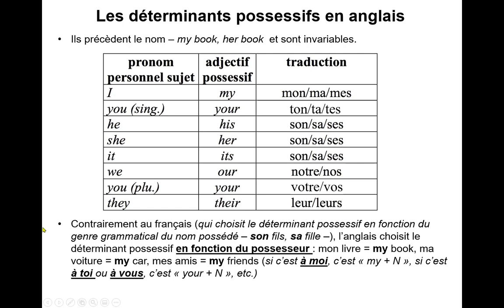Contrairement au français, qui choisit le déterminant possessif en fonction du genre grammatical du nom possédé — comme dans 'son fils' ou 'sa fille' — l'anglais choisit le déterminant possessif en fonction du possesseur. 'Mon livre', c'est 'my book'. 'Ma voiture', c'est 'my car'. 'Mes amis', c'est 'my friends'. Si c'est à moi, c'est 'my' plus un nom. Si c'est à toi ou à vous, c'est 'your' plus un nom, etc.